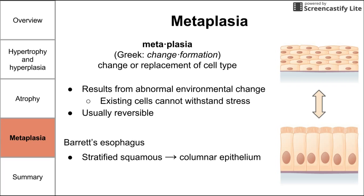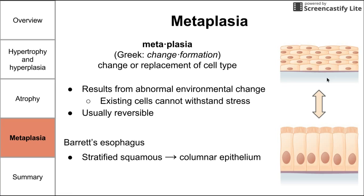It's important to note that metaplasia is usually reversible, so if the issue is fixed — such as if we reduce the acid exposure — the goblet cells can gradually be replaced by the normal squamous cells. Of course, this constant changing in cell type can increase your risk for esophageal cancer.